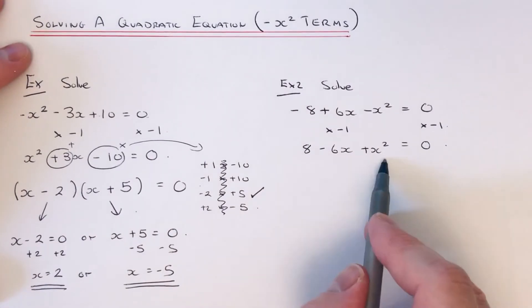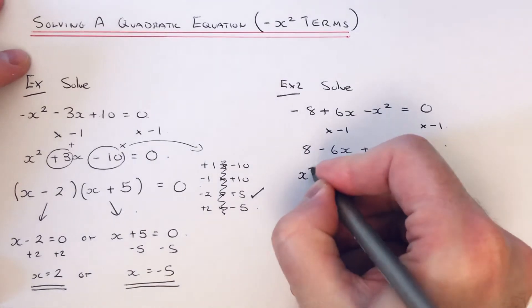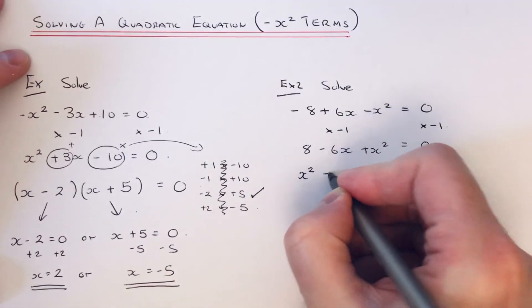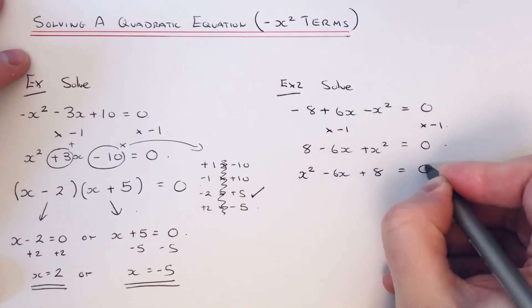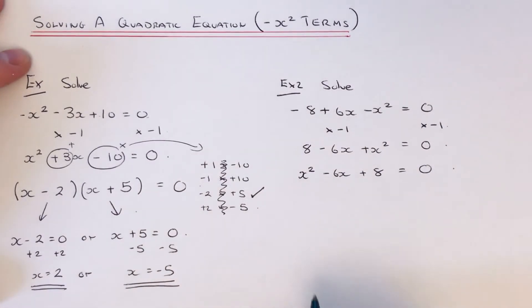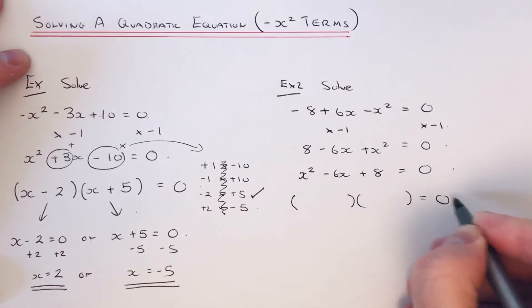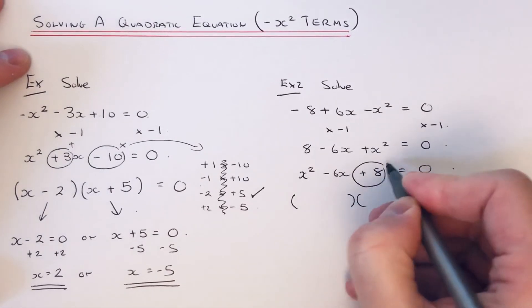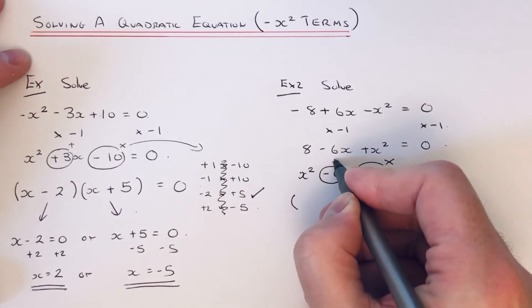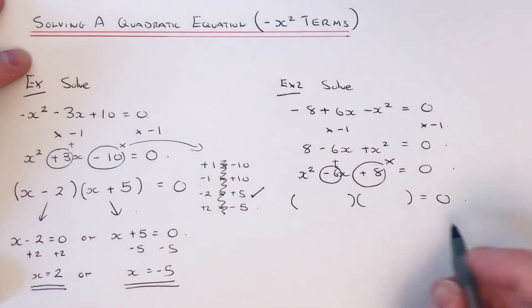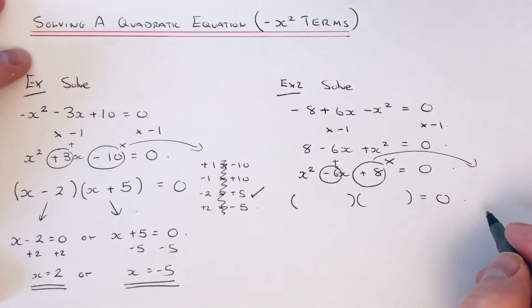So let's just reorder this so we have it with the x squared term first, and then we want the x term in the middle, and we want the number plus 8 at the end. So again, let's try to put it into double brackets. So this time the numbers have got to multiply to give me plus 8 and add to give us minus 6. So let's write all the pairs that multiply to give plus 8.